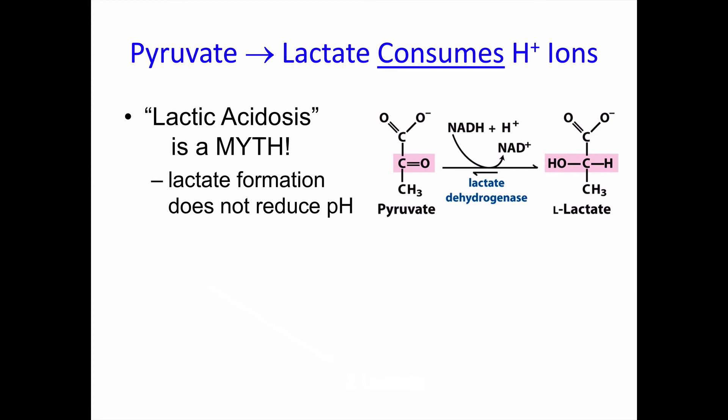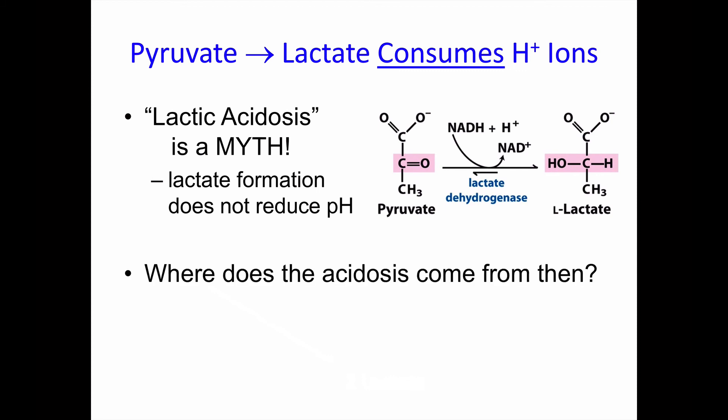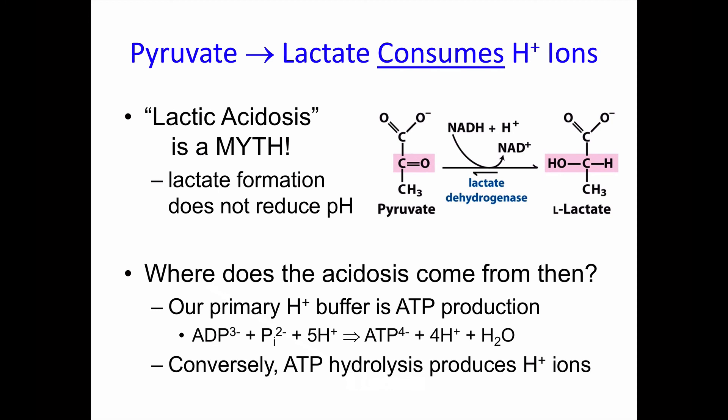What is typically taught is that the production of lactic acid causes the acidosis and lowers the pH, but the chemical equation shows that to not be true — the production of lactic acid does not cause the acidosis. It is certainly true that anaerobic metabolism is associated with an elevated lactate and with a metabolic acidosis, but where does the acidosis come from? Our primary buffer for H+ ions is the continuing production of ATP. ADP has a negative 3 charge, inorganic phosphate a negative 2 charge, and ATP is negative 4. In ATP synthesis, one H+ ion is consumed. Conversely, every time ATP is hydrolyzed, it produces an H+ ion. So it is continuing ATP hydrolysis outstripping ATP production that produces the metabolic acidosis. It would be most correct to say that anaerobic metabolism leads to a lactate-associated acidosis — they are both markers of anaerobic metabolism, but one does not cause the other.